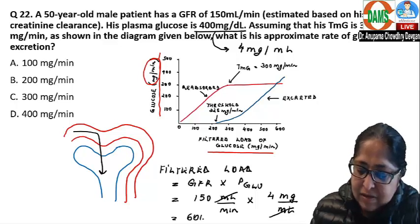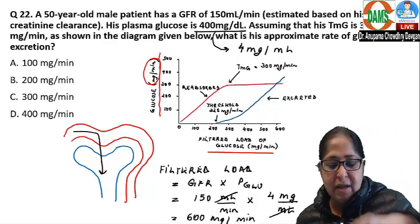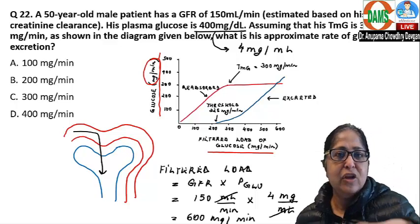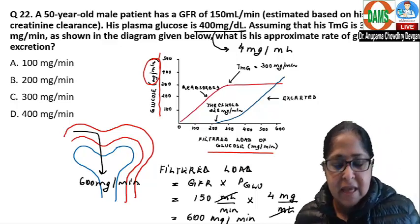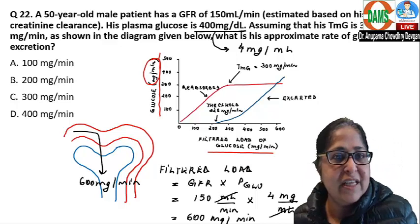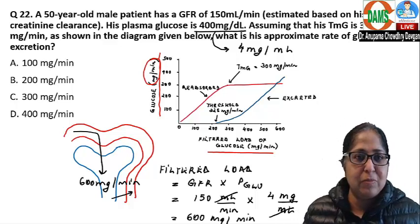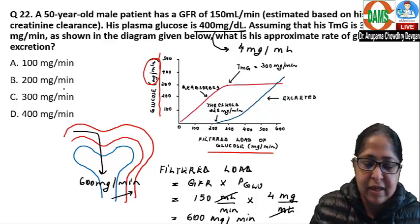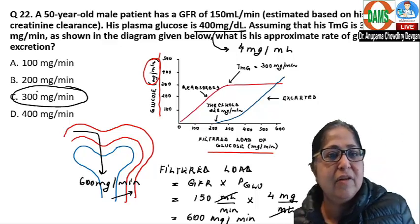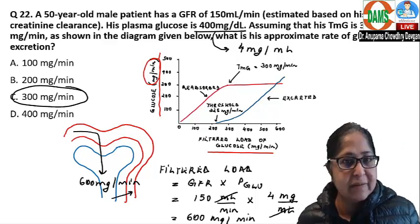So 600 mg per minute of glucose is being filtered in this patient. The TMG is 300 mg per minute, meaning 300 mg is being reabsorbed. The excretion rate is therefore 600 minus 300, which equals 300 mg per minute.